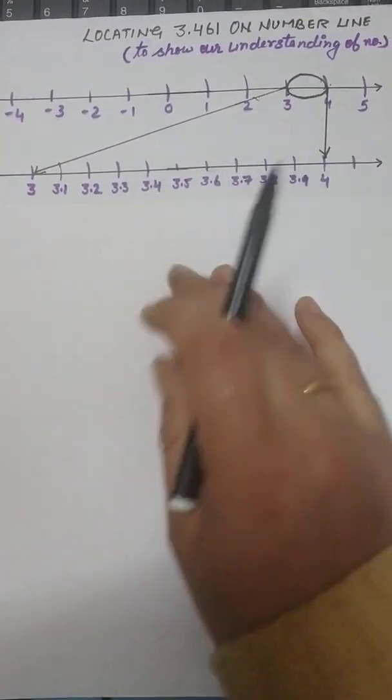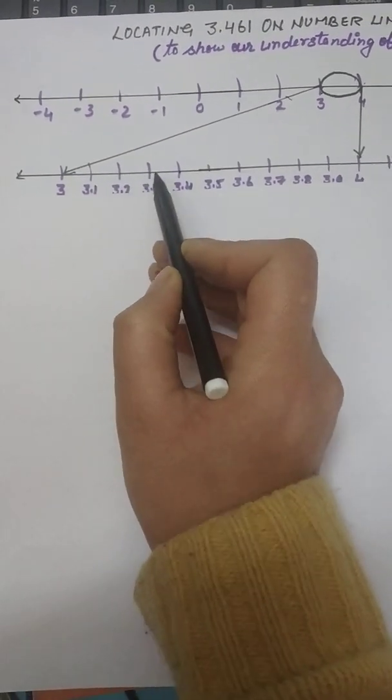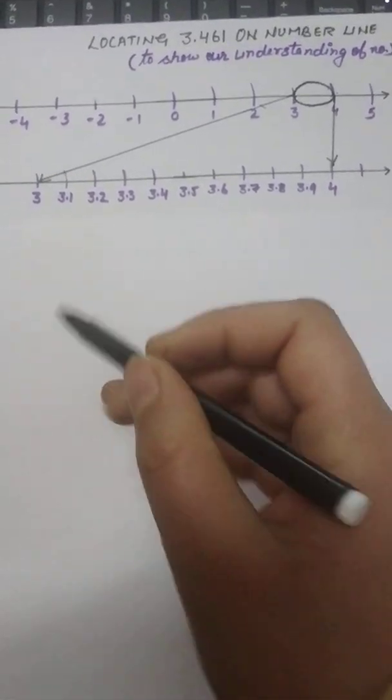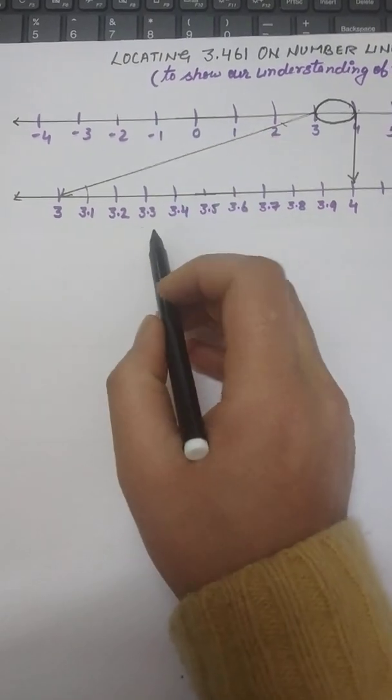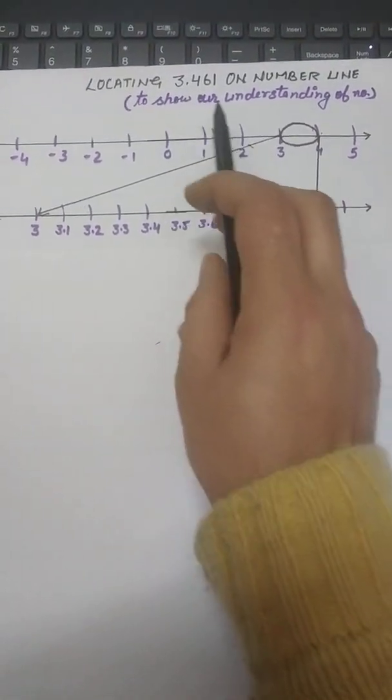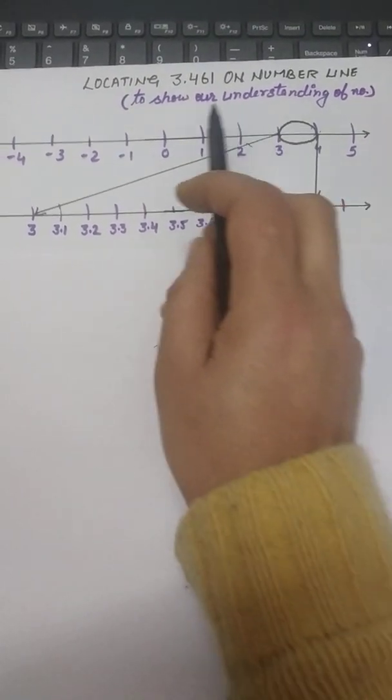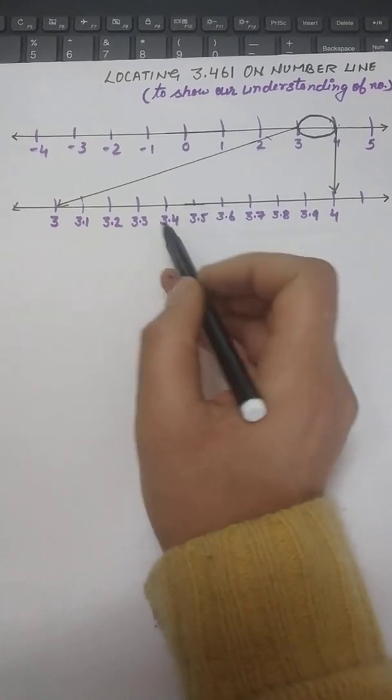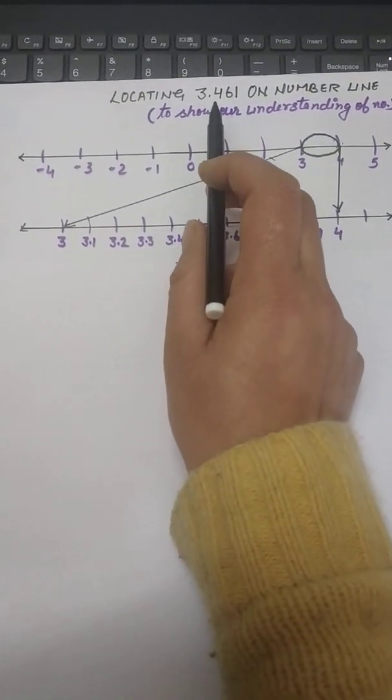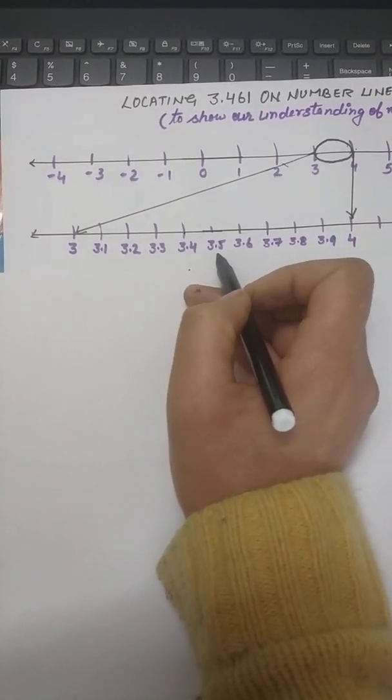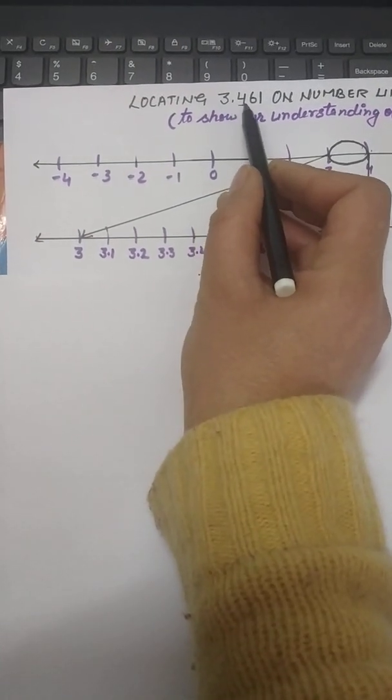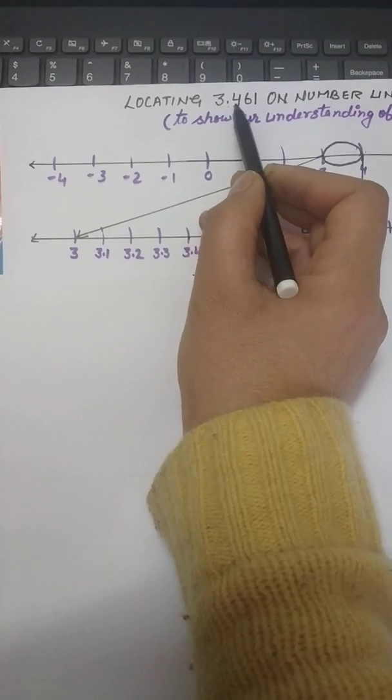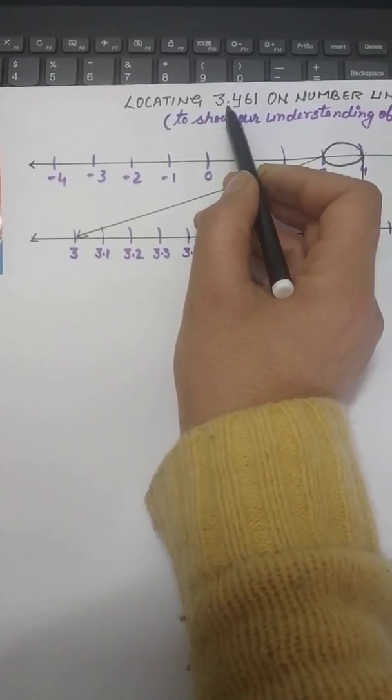So here I've shown that this magnifying area, now 3 became this and 4 became this because we magnified it and in between we made 10 equal parts. 1, 2, 3, 4, 5, 6, 7, 8, 9 and this is the 10th one. Now we'll magnify again. We have to see where does this lie? 3.461 here because we know 3.461 is somewhere within 3 and 4. And as our system, this decimal system based on 10, that's why we are doing 10 parts of it. Now where does it lie right now? Here somewhere.